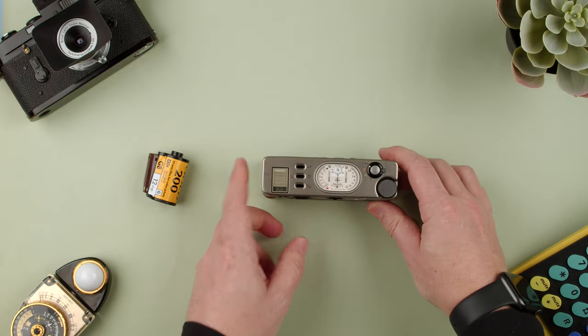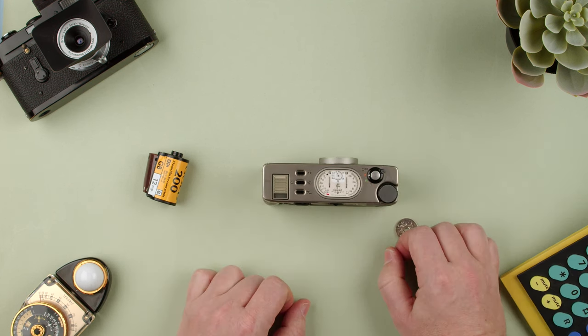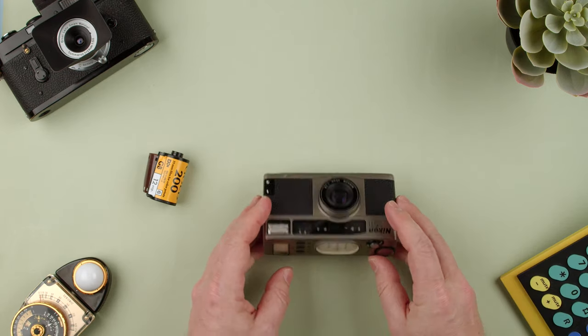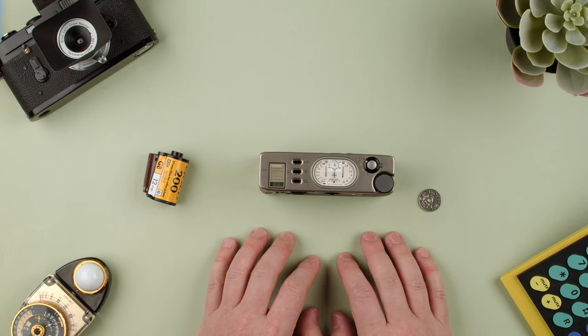Once the battery is in, we can see some indications here, and we can turn it on by turning this spindle. But let's go through what's on the camera before we operate it.